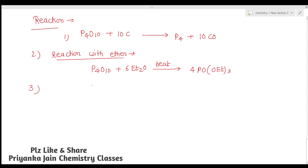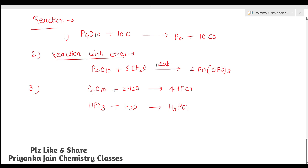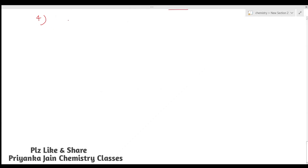When P4O10 is treated with a limited amount of water, it forms metaphosphoric acid (HPO3). If more water is added, the metaphosphoric acid further reacts with H2O to form H3PO4 (orthophosphoric acid). So in excess water, P4O10 gives H3PO4, and in limited water it gives metaphosphoric acid.